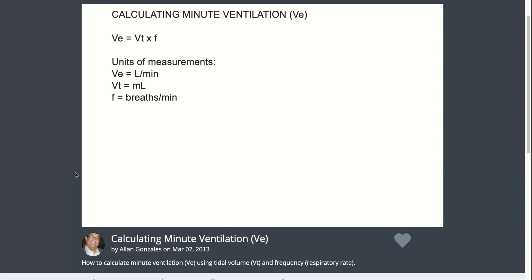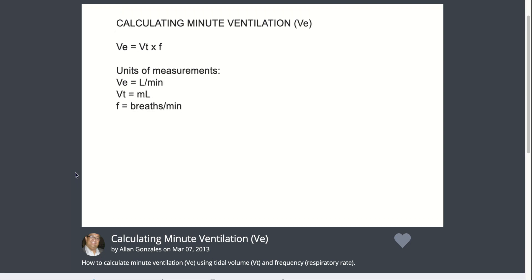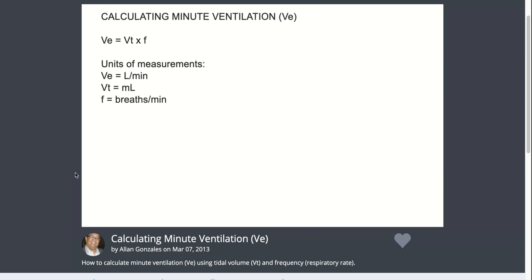So, let's take an example. Minute ventilation equals tidal volume times frequency. Let's say we have a tidal volume of 500 mLs times 12 breaths per minute. This will come to 6,000 mLs per minute.